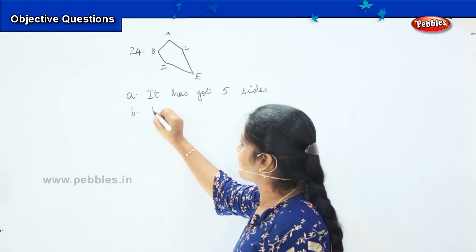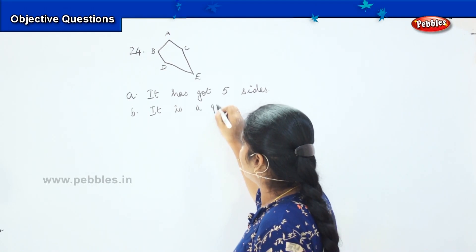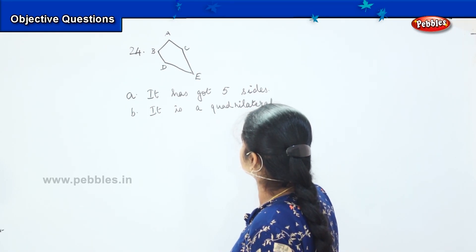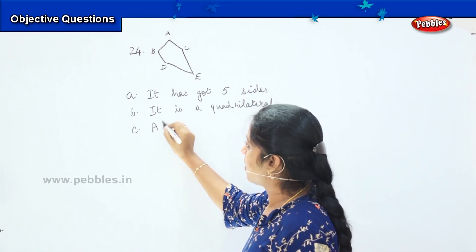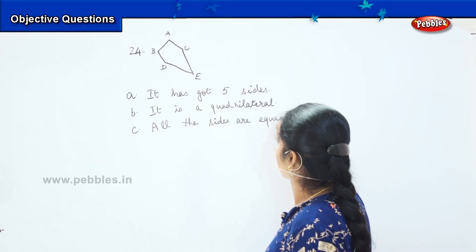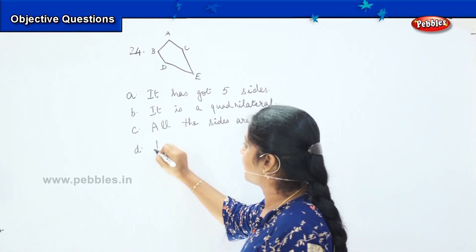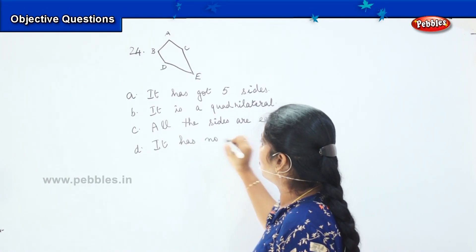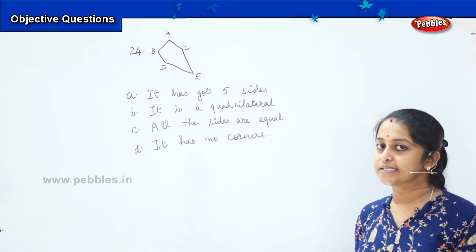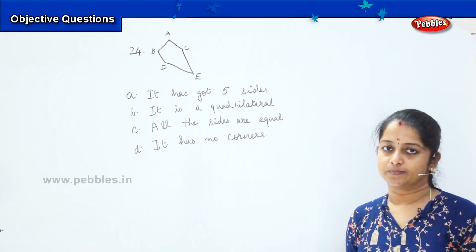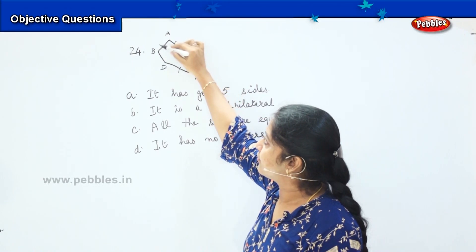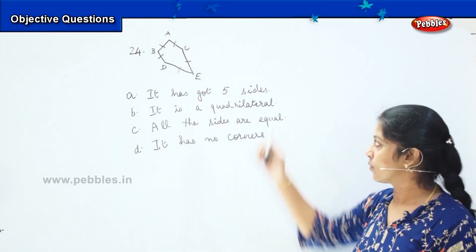The next option is it is a quadrilateral. The next option is all the sides are equal. And the last option is it has no corners. Now you have to tell me which is the right option among the four given options. The first one says it has got five sides. Shall we count the number of sides? One, two, three, four, five. So option A is correct.